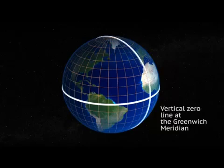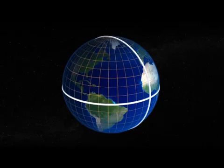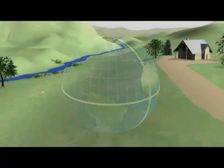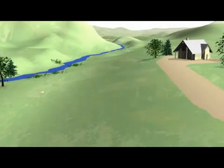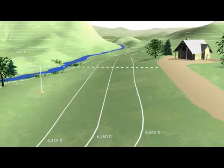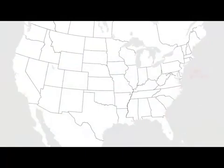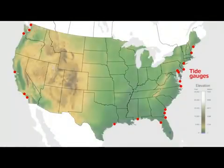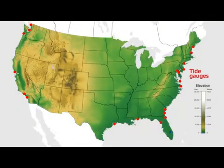There is also a zero line at the Greenwich Meridian, from which we measure east and west. Together, these lines provide a reference for latitude and longitude. Vertical datums are used to measure elevations and water depths. Sometimes the word height is used to refer to elevation information.